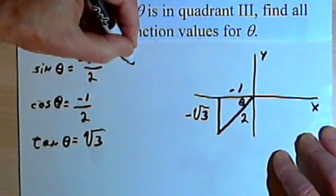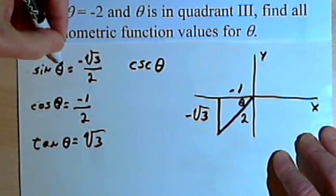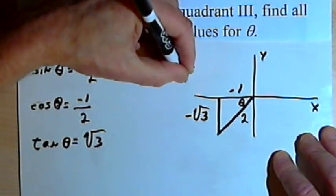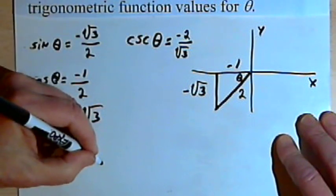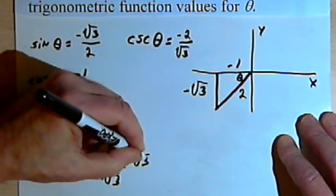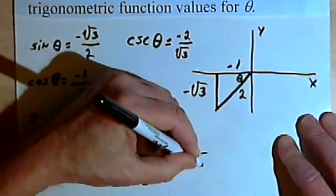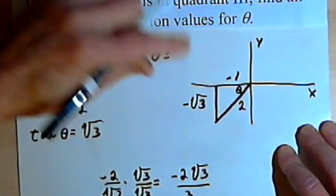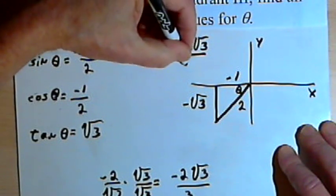For the remaining values, the cosecant of theta is going to equal the reciprocal of the sine, so that's going to equal negative 2 over the square root of 3. Let's do a little work and get rid of that radical sign in the denominator. So if I've got negative 2 over the square root of 3, and I multiply that by the square root of 3 over the square root of 3, I'm going to get negative 2 times the square root of 3 over 3.